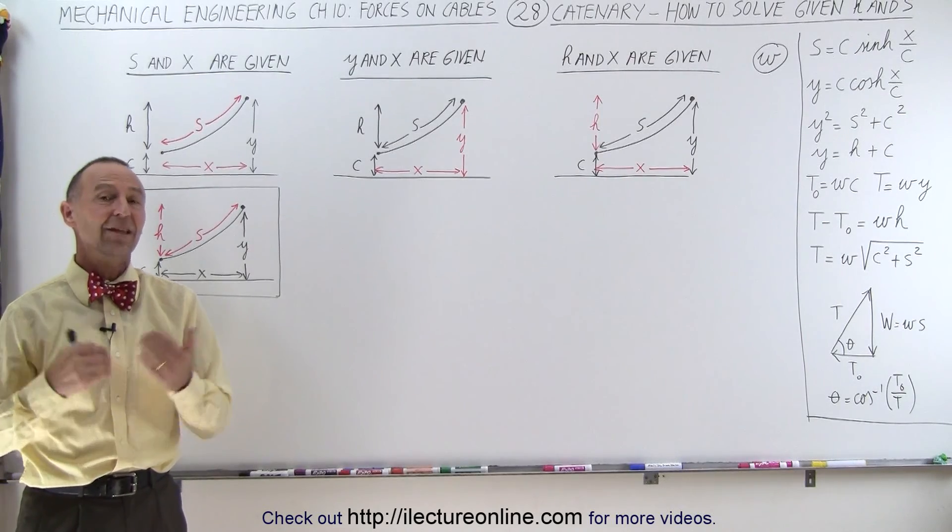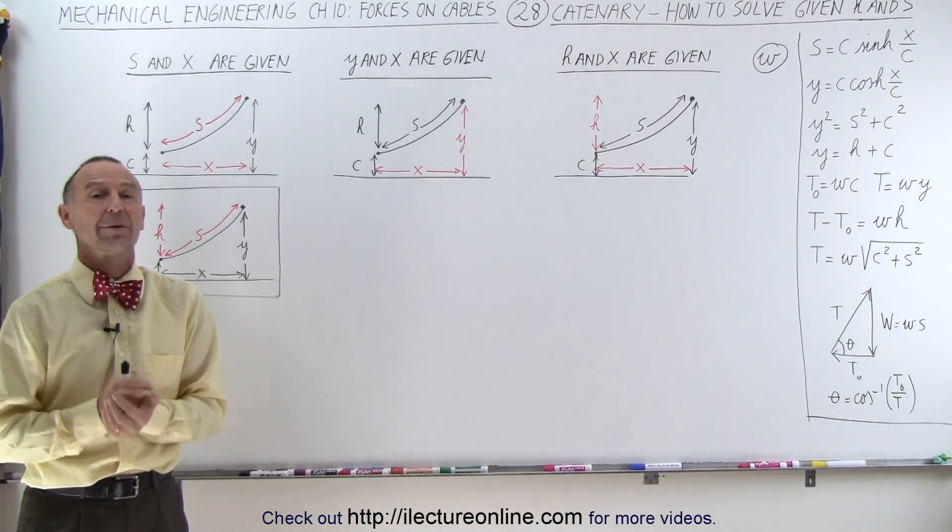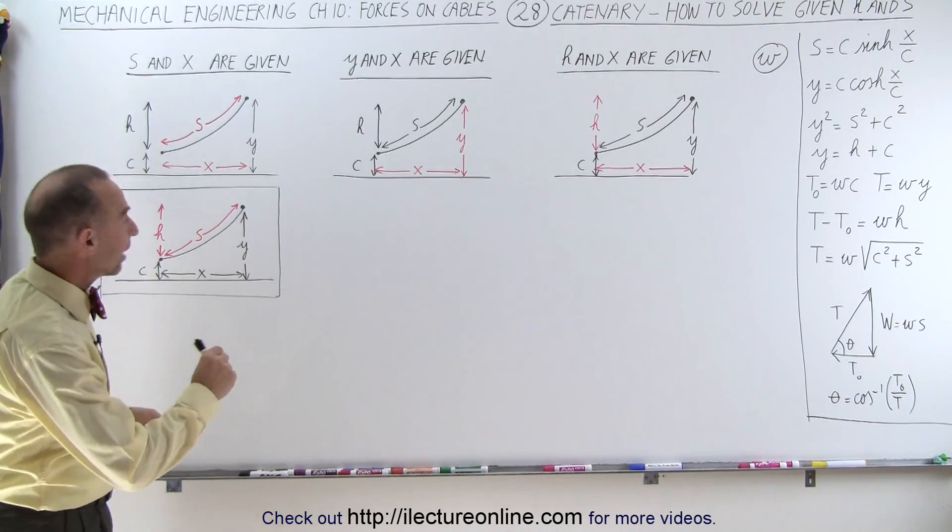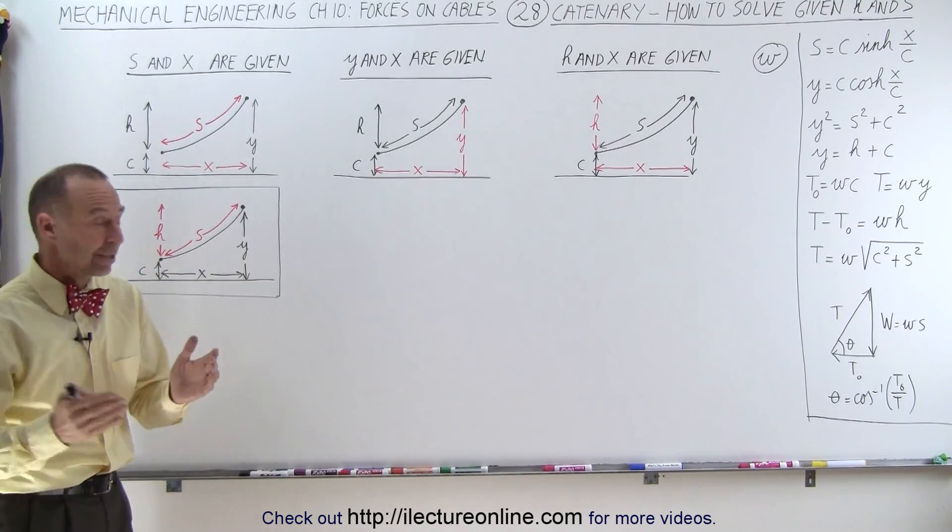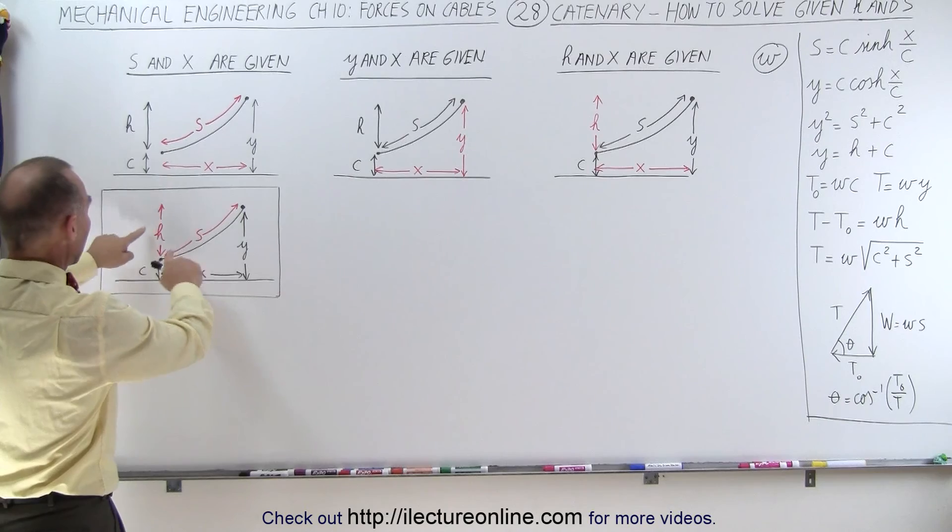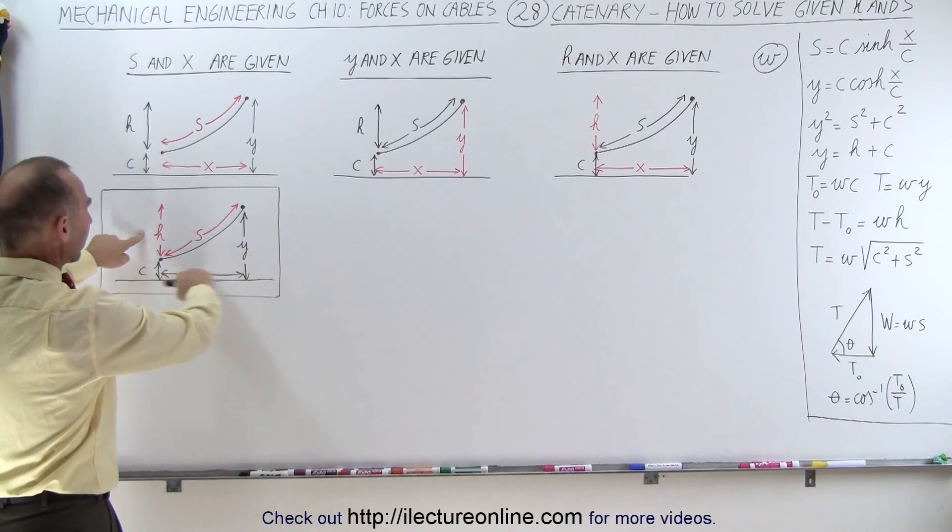Welcome to ElectronLine. In this video, we're going to attack the catenary problem when H and S are given. And here we have the example. H and S are given. We're not given the other three variables.